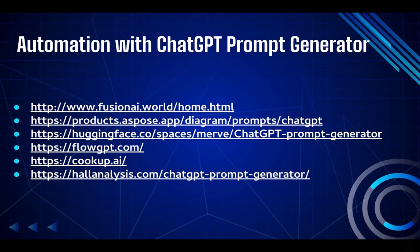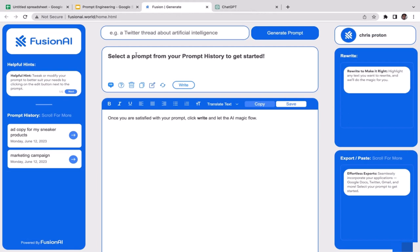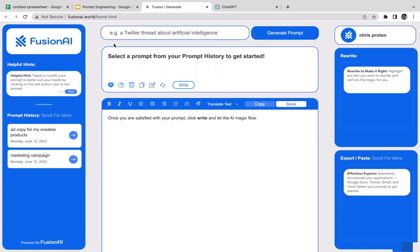Welcome back to the course. In this video we're going to learn how to utilize some ChatGPT prompt generator tools. We're going to learn how to automate ChatGPT prompt creation — instead of writing the prompt manually, we're going to utilize a prompt generator. Let's go to the first one, Vision AI. Just click on it and it will take you there.